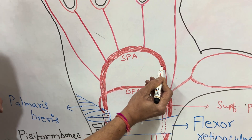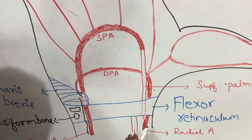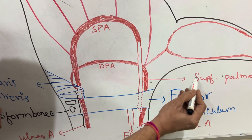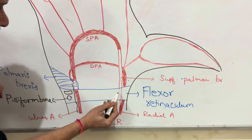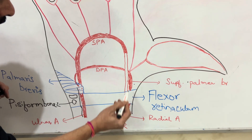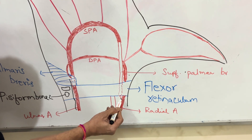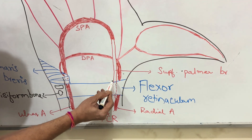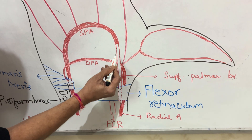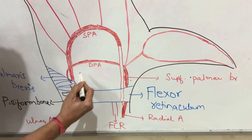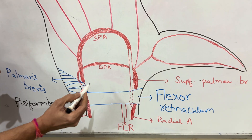This superficial branch of the ulnar artery forms the superficial palmar arch by joining mainly with the superficial palmar branch of the radial artery. The radial artery is on the radial side, and one of its branches — the superficial palmar branch — usually takes part in the formation of this arch.